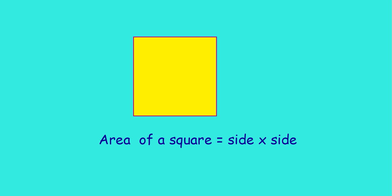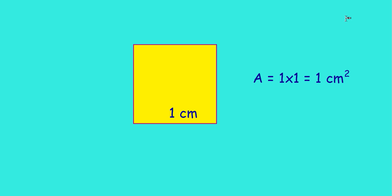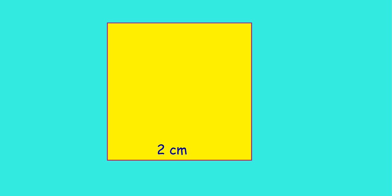Let me take a square. What is this area? Area of a square you can write it as side into side. If the length of the side is 1 cm, this area we can write it as 1 into 1, which is equal to 1 cm square. If the side of the square is 2 cm, it is 2 into 2, which is equal to 4 cm square.